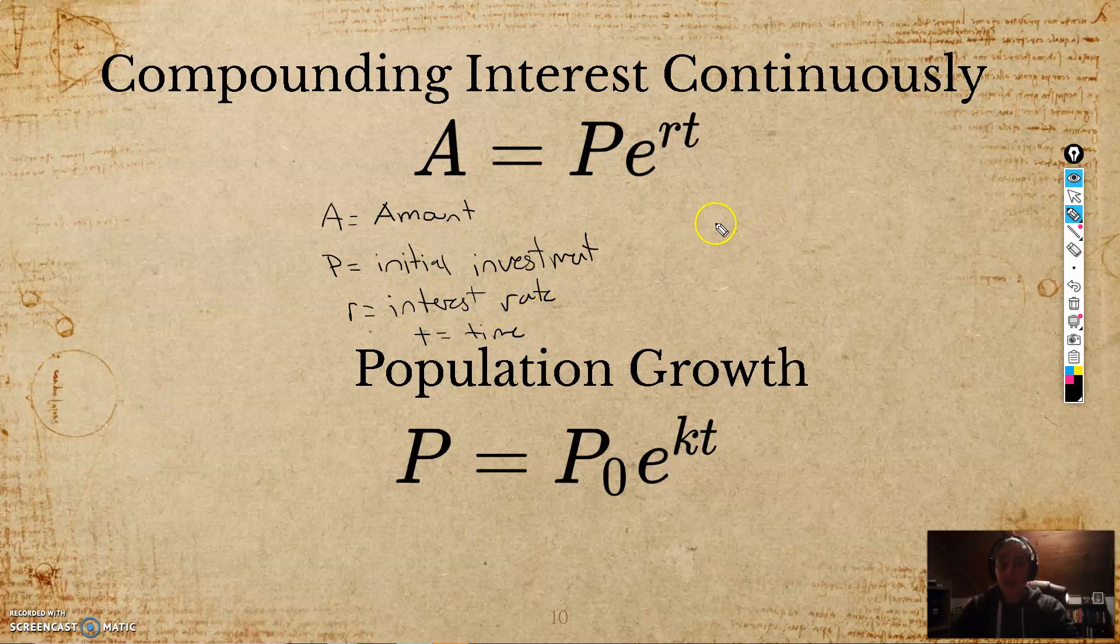So, for instance, if I wanted to know how much money I would get if I initially invested $100 at 8%, which would be 0.08, over the course of, I don't know, let's say 10 years. Let's see how our money grows here. While we take our handy-dandy calculator, open it up, throw this in. What is 100 times e to the 0.08 times 10?